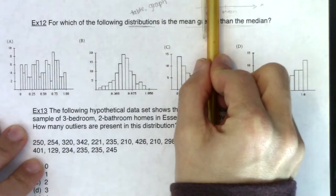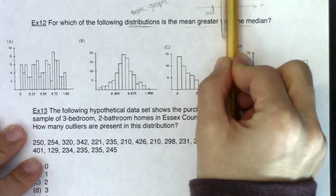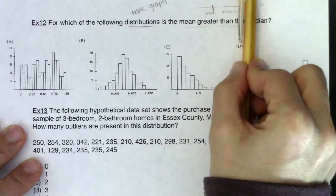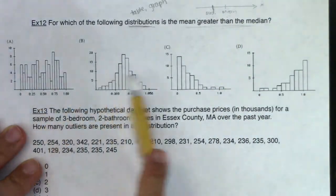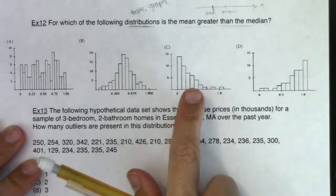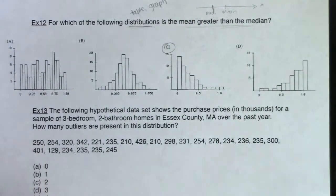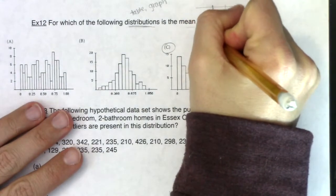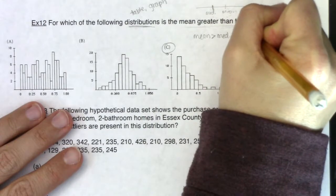So I want the mean to be to the right of the median. And keep in mind, in a symmetric graph, the mean and median are the same. And the mean has now been pulled to the right of the median. The mean is pulled to the right in a graph that skews right. So if I take a look at these four graphs, the one that skews right is option C.